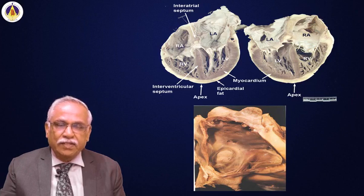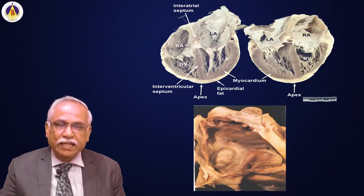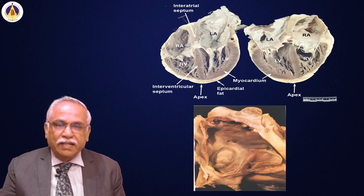The left atrium has four important components: the left atrial appendage; the venous portion of the left atrium, which receives blood from the pulmonary veins; the vestibule of the left atrium, which contains the mitral valve and directs flow from the left atrium into the ventricle; and lastly, the left atrial side of the interatrial septum, which contains the foramen ovale.